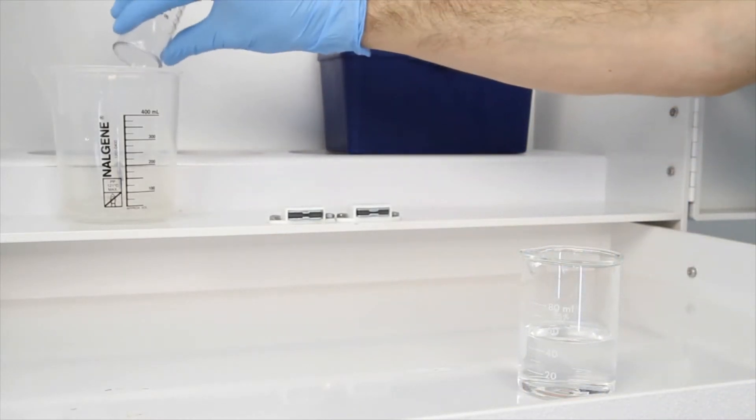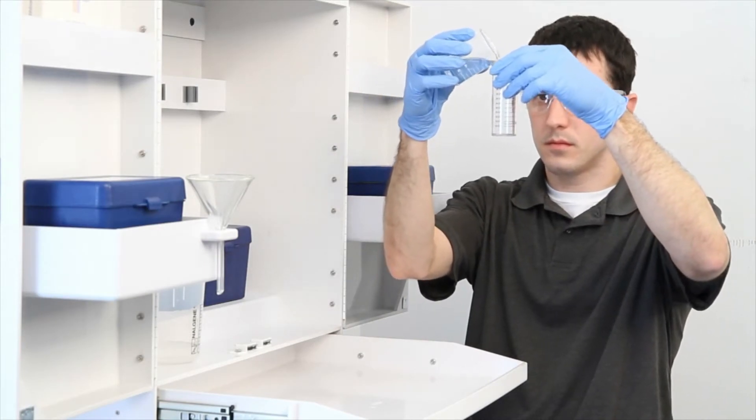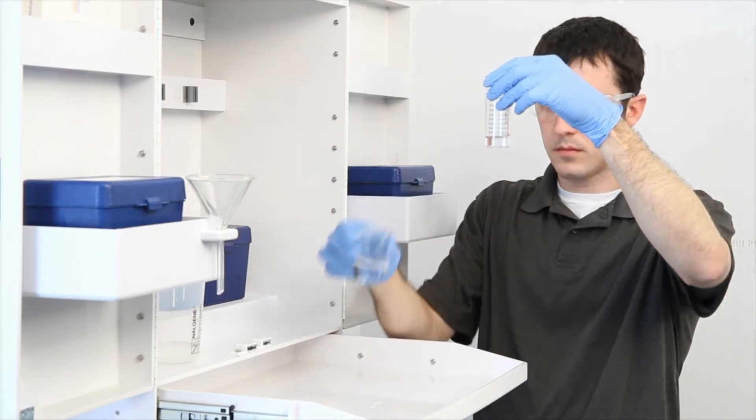To get an accurate sample size, hold the vial close to eye level. Once you feel you have an accurate sample, place the vial on a level surface and bend down to eye level.